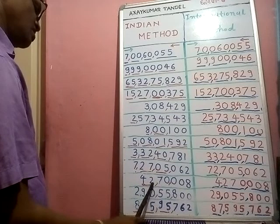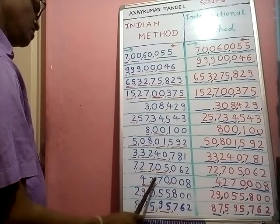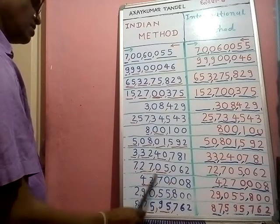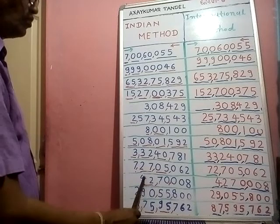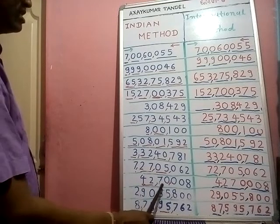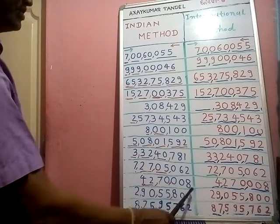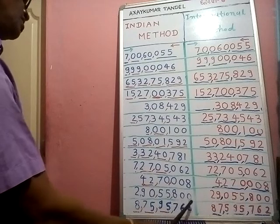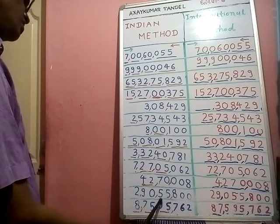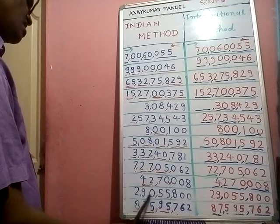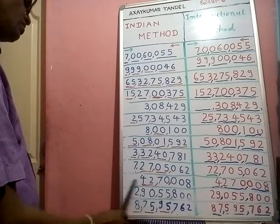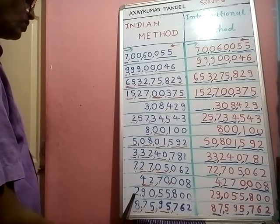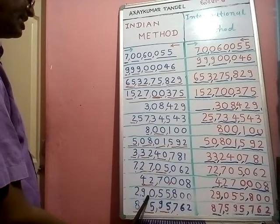Next one — ones, tens, hundreds, thousands, ten thousands, lakhs, ten lakhs, crores. We read: forty-two lakh seventy thousand eight. Next one — ones, tens, hundreds, thousands, ten thousands, lakhs, ten lakhs, crores. We read: two crore ninety lakh fifty-five thousand eight hundred.